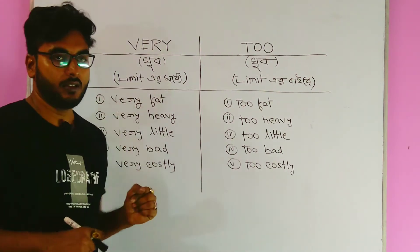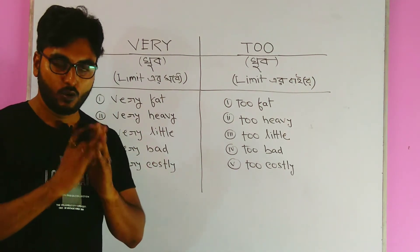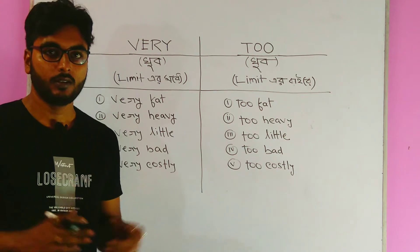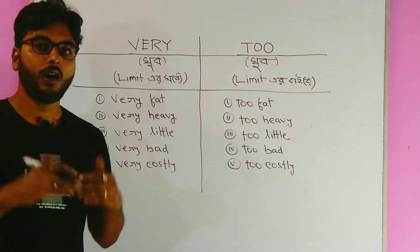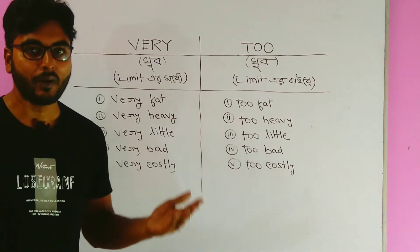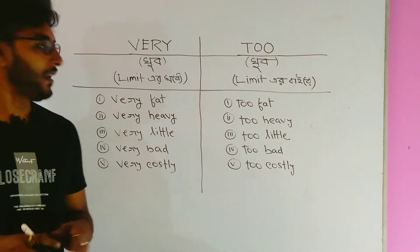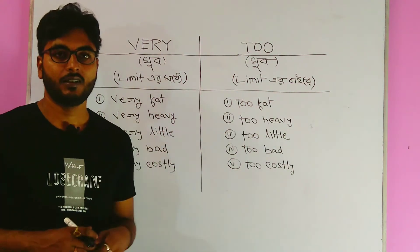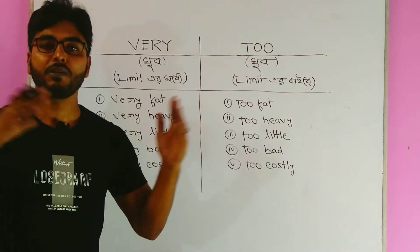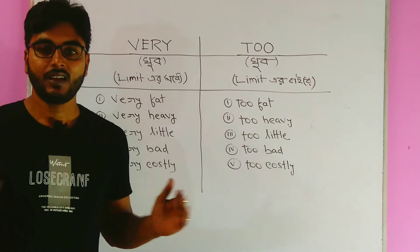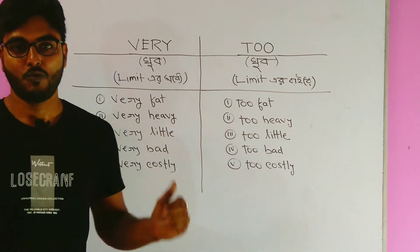Very fat — it means very overweight, but he can walk or move. It is manageable. But when we say too fat, it means extremely fat and he cannot walk or move.